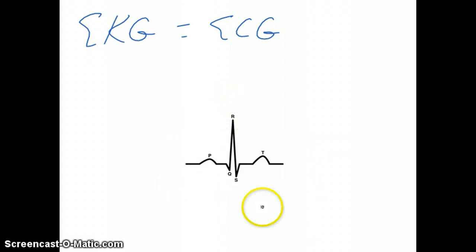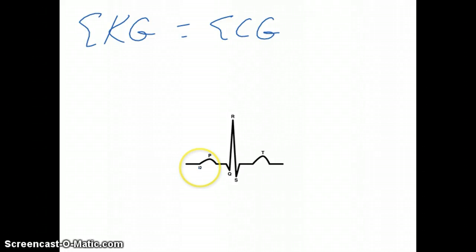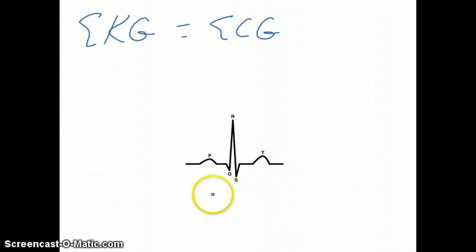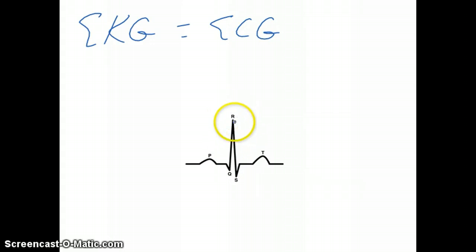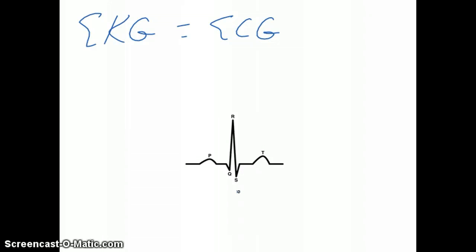Here we have a normal waveform representing the electrical activity of the heart. The EKG machine's job is to detect that electricity and create a waveform. First, we have the P wave, which represents atrial contraction. Then we have the QRS complex: Q is the first downward deflection after the P, R is the tall upward deflection, and S follows. The QRS complex represents ventricular depolarization, which causes ventricular contraction. Then you have the T wave, which represents ventricular relaxation, or ventricular repolarization.